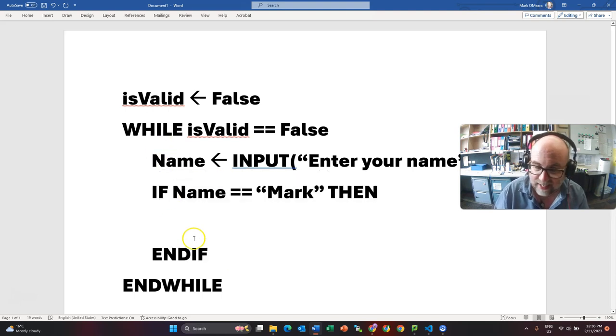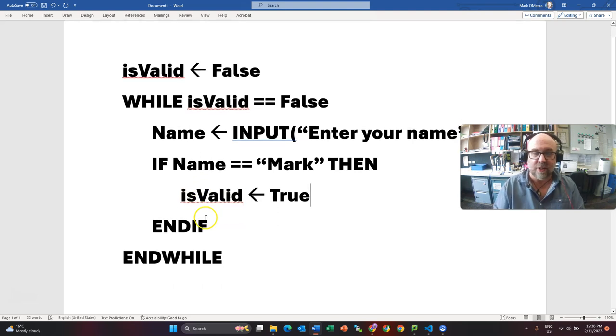And so I have another indent there. Because it is further. It is both in the while and it is in the if. So if they say their name is Mark. Then I am actually going to change that boolean. Is valid. And I am going to say that it now equals true.